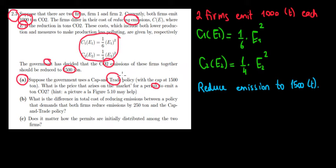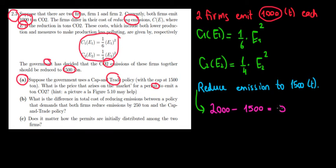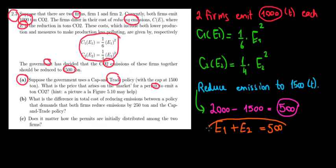If emissions must be reduced to 1500 tons, it means it's permissible to pollute 1500 tons total. At the moment, two firms each emit a thousand tons, giving 2000 tons total. So what we actually have to reduce is 2000 minus 1500, meaning there must be a reduction in emissions of 500 tons. In total, the emission reduction must be 500 tons, so E1 plus E2 must equal 500.